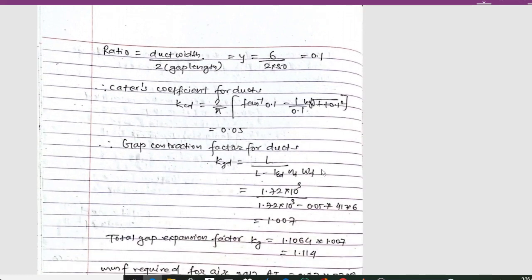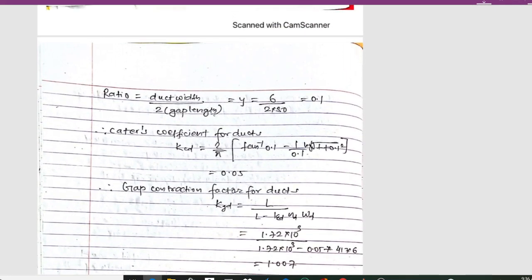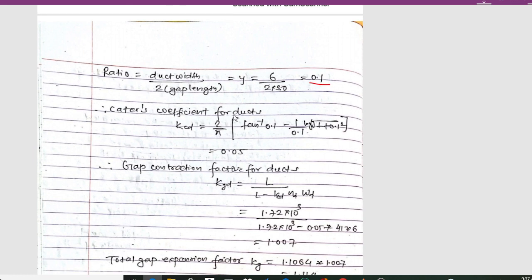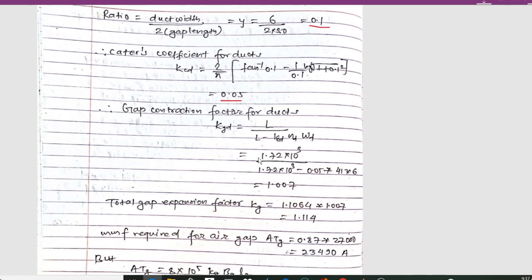For the duct, y = wd / (2 × lg) = 6 / (2 × 38) ≈ 0.1. The Carter's coefficient for the duct, Kcd = (2/π) × [tan⁻¹(y) − (1/y) × log√(1 + y²)], substituting y = 0.1 gives Kcd = 0.05.